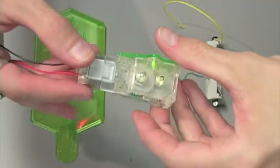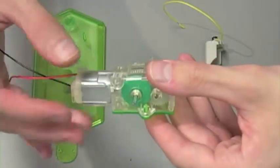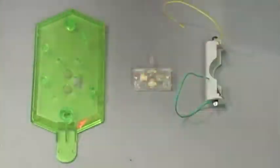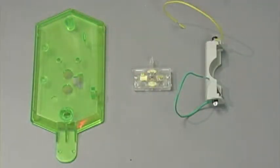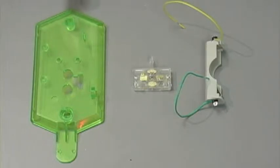For step five, in addition to our gearbox, we're going to need our battery case, our switch box, and part B7.